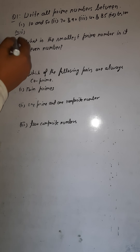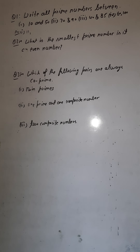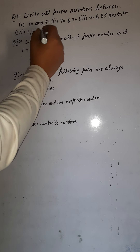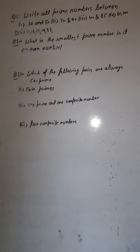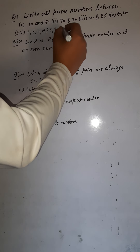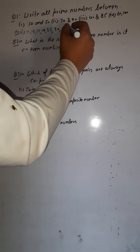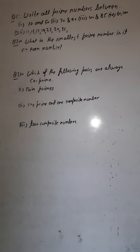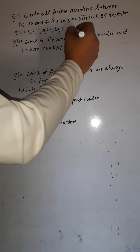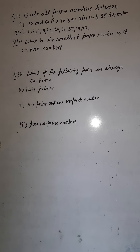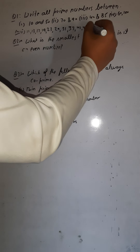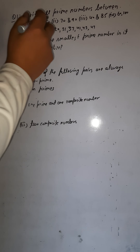After 10 comes 11, and 11 is prime. Then 12 is not prime. 13 is prime. Then 17, then 19, then 23, then 29, then 31, then 37, then 41, then 43, and 47 — checking up to 50.